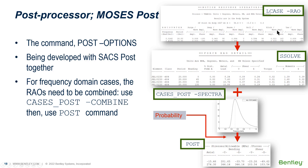These two calculations are performed in the structural analysis menu of Moses. Then, as in the normal frequency domain procedure, these RAOs need to be combined with the C-spectrum. Then we get the response spectrum — in this case, it is the response spectrum of the internal forces.